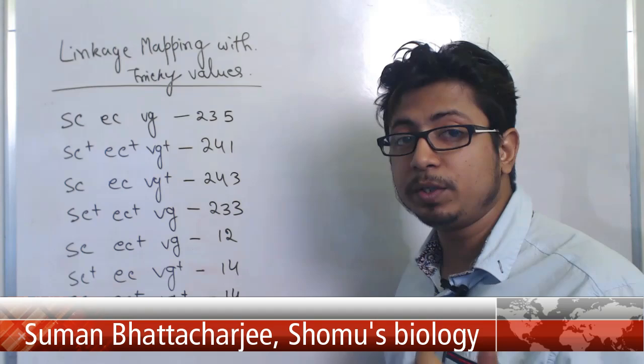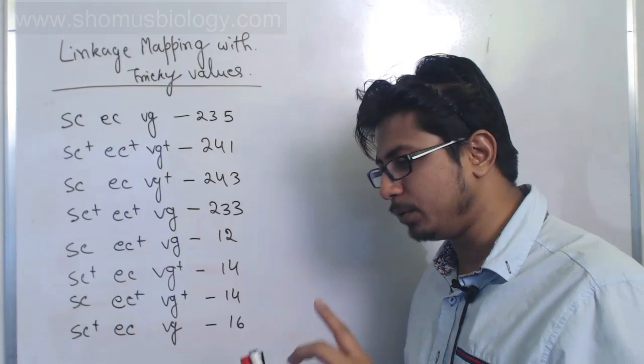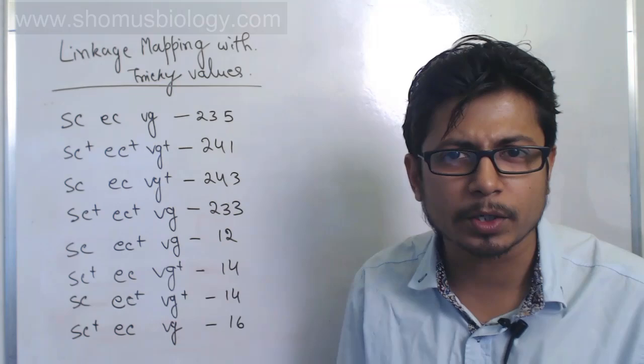Now this is a dataset of a typical three-point cross. In the three-point cross there is a different approach to solving them — you need to find out the parental progeny, the double crossover product, single crossover product, and all of that.